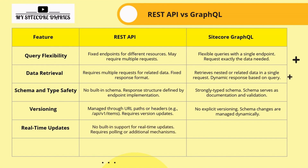Regarding real-time updates: traditional REST API has no built-in support for real-time updates — you need to implement polling or other mechanisms to get the latest data. Sitecore GraphQL supports subscriptions, allowing clients to receive real-time updates whenever data changes. This provides a more dynamic and responsive user experience without the need for constant polling.